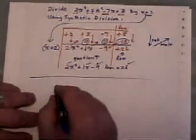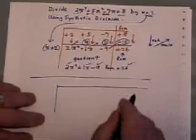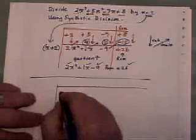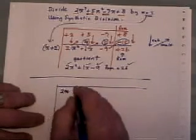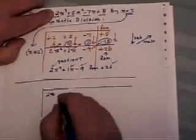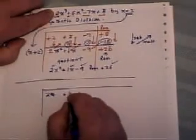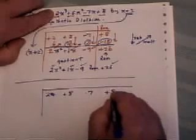Now I know that your book and some of the other teachers have another way of doing this so I'm going to show you another way of doing this. Here is our original question up here so they write the 2, the plus 5, the minus 7, the plus 8 down.